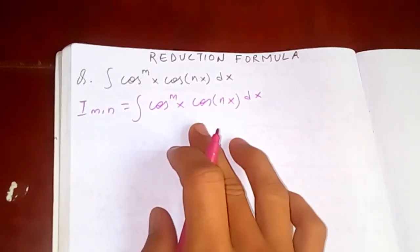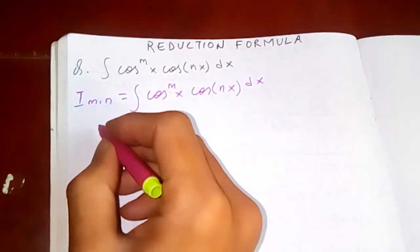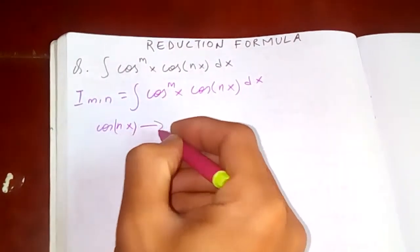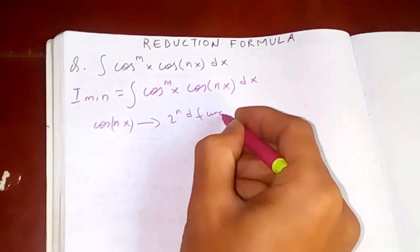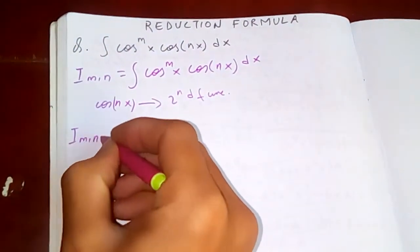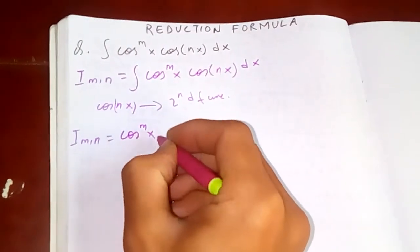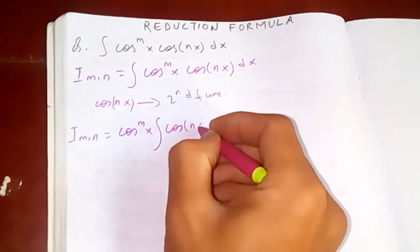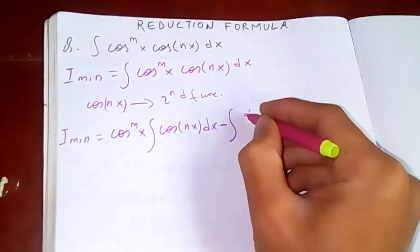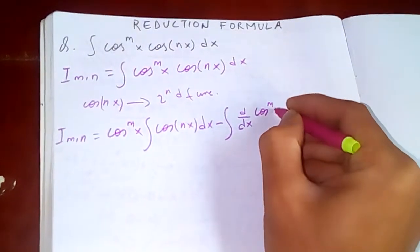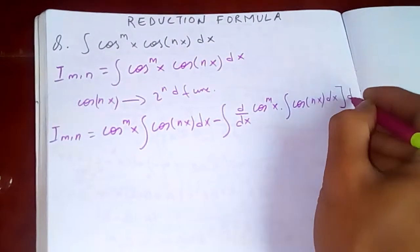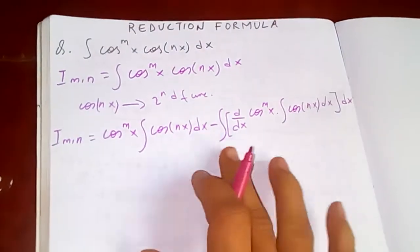Now we are going to use integration by parts, treating cos(nx) as the second function and cos^m(x) as our first function. By integration by parts: first function times integration of second function, minus integration of differentiation of first function times integration of second. So we get d/dx of cos^m(x) times integration of cos(nx) dx.